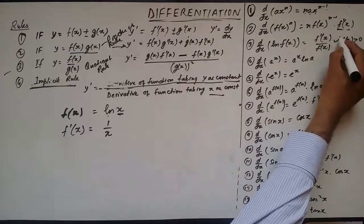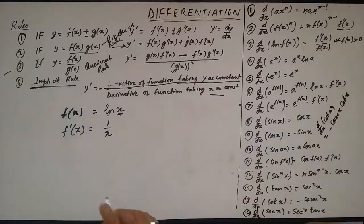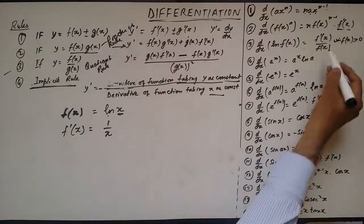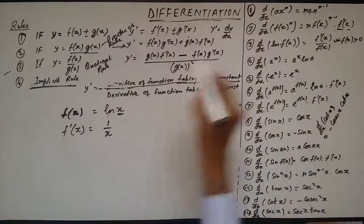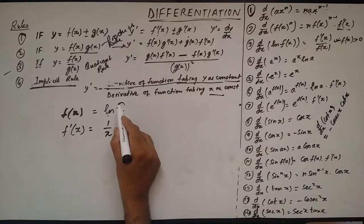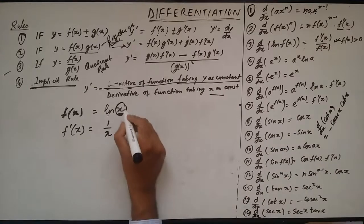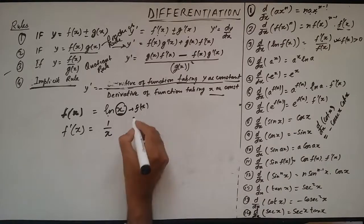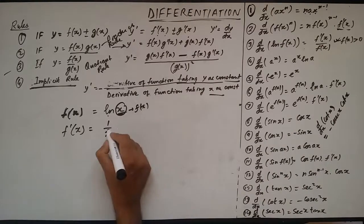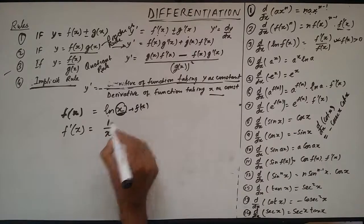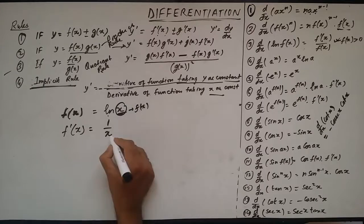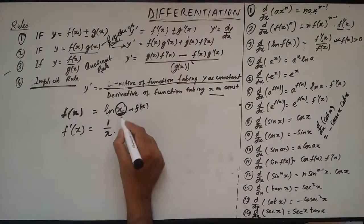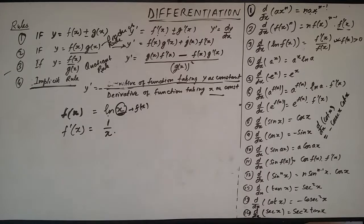This is the rule we are applying: the derivative of the logarithm function is the derivative of the inner function f(x) divided by that function f(x). So the derivative of x is 1, upon that function f(x) which is x.